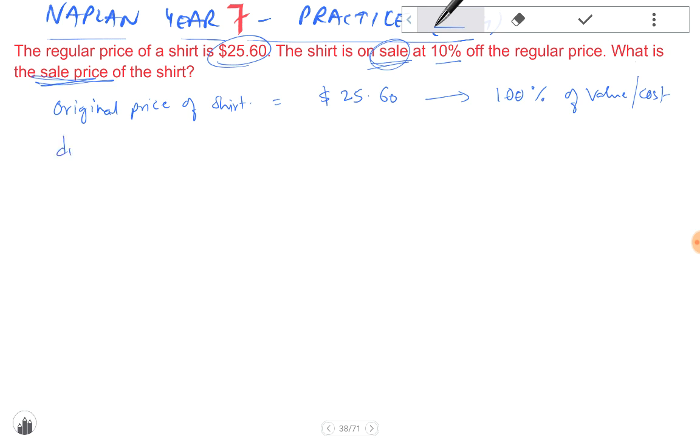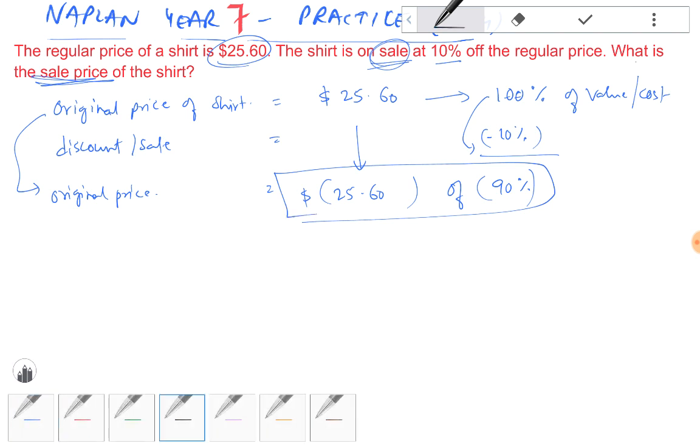Now we have been given a discount or a sale of 10%, so the original price should also be reduced by 10%. So from 100% if we take away 10% we are left with 90%. So $25.60 of 90% is what we need to find, and the reason we do this is because we're getting a 10% discount on that value.